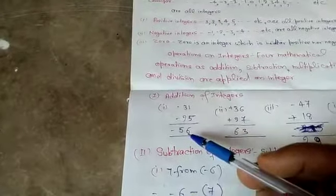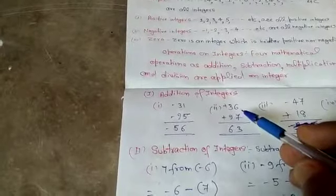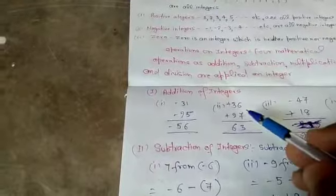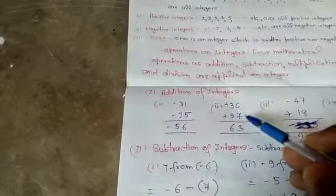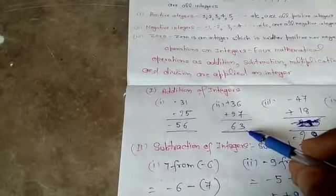Similarly, taking two positive integers and add them. Plus 36 plus 27 equal to 63.